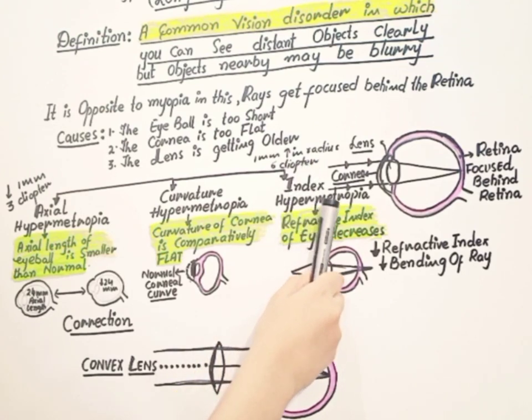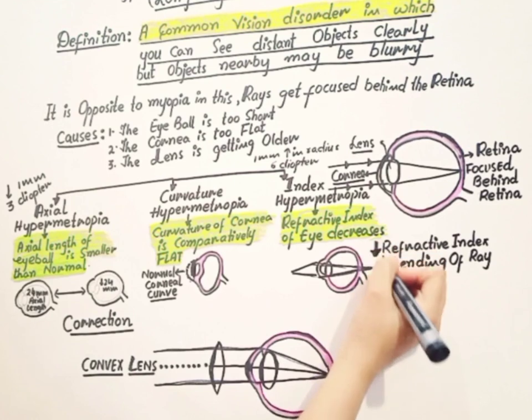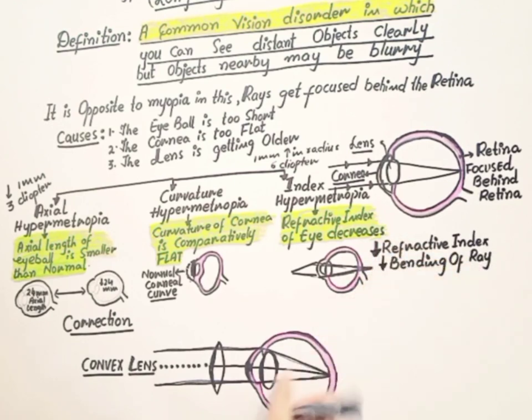The next one is index hypermetropia. This point should be clear: whenever the refractive index is decreased, the bending of ray will be decreased and the patient couldn't see the nearby objects and hypermetropia condition occurs.